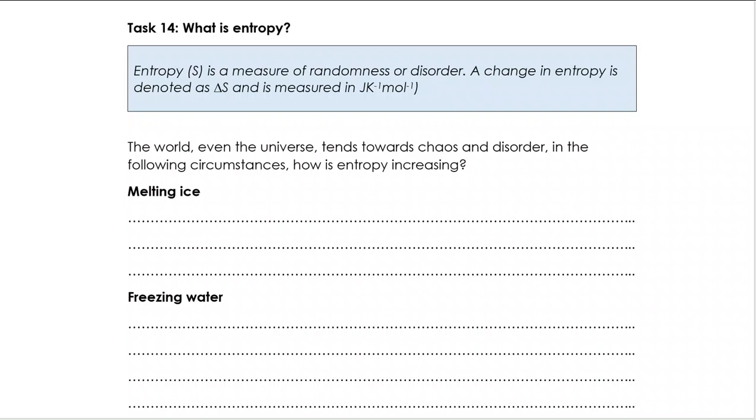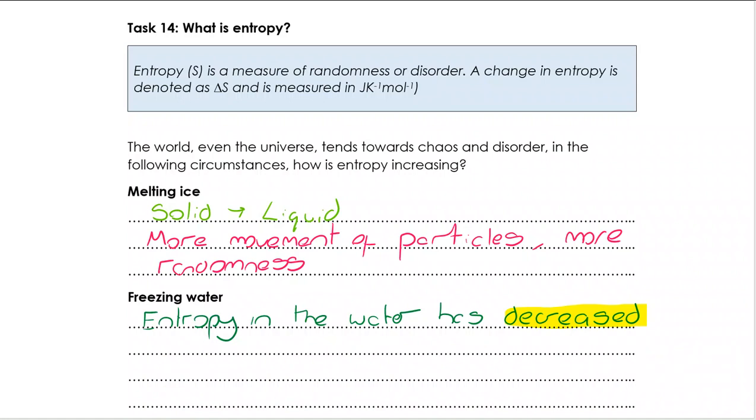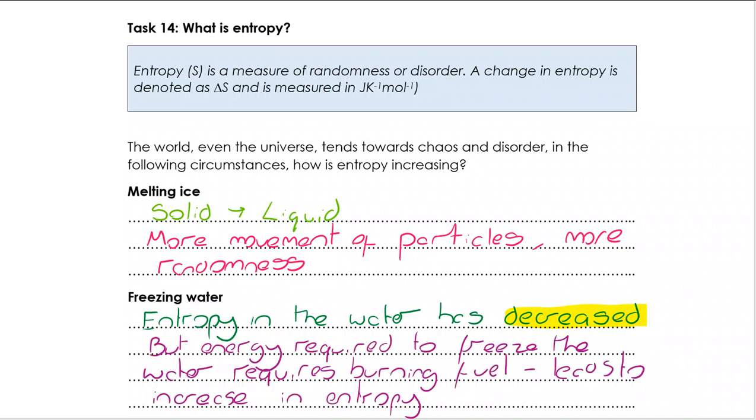Let's have a think about how melting ice and then freezing water will increase entropy. For melting ice we're going from a solid to a liquid, so of course there is greater disorder. The atoms have moved from vibrating around a fixed point to slipping and sliding over each other, moving much more randomly. That's a sign of increased entropy. Freezing water however, we're going from a liquid to a solid, so the entropy in the water has decreased. However, that freezer has to be powered by electricity, possibly formed by burning fuels which has created carbon dioxide. So although the entropy in the water has decreased, the overall entropy in the universe has still increased.